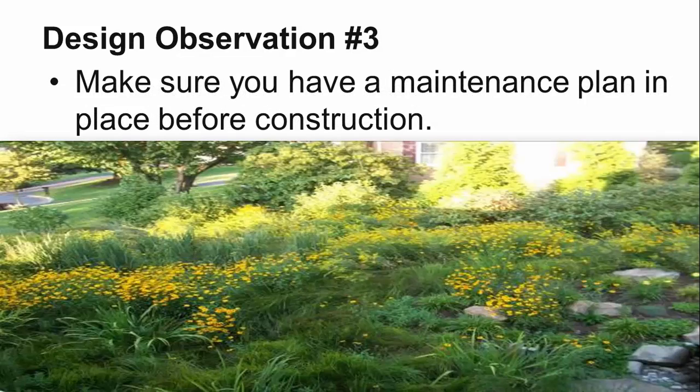One of the main reasons rain gardens fail is that people do not develop a maintenance plan. Undesired species can ruin the function and aesthetics of any rain garden, particularly in the early stages of establishment.